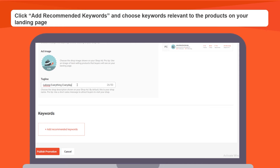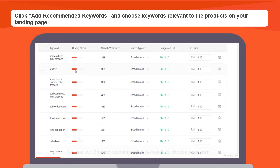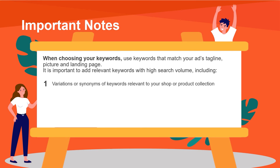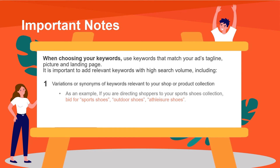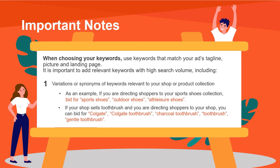Next, click add recommended keywords and choose keywords relevant to the products on your landing page. You can use Shopee recommended keywords or choose your own. When choosing your keywords, use keywords that match your ad's tagline, picture and landing page. It is important to add relevant keywords with high search volume, including variations or synonyms of keywords relevant to your shop or product collection. For example, if you are directing shoppers to your sports shoes collection, bid for sports shoes, outdoor shoes, and athleisure shoes. If your shop sells toothbrush and you are directing shoppers to your shop, you can bid for Colgate, Colgate toothbrush, charcoal toothbrush, toothbrush, or gentle toothbrush.